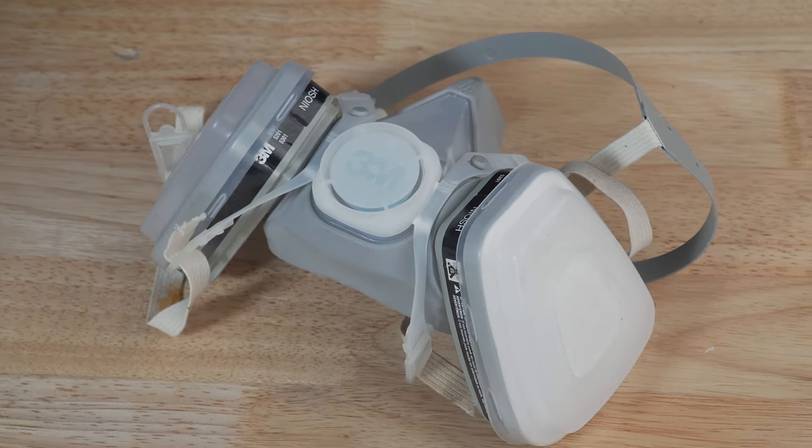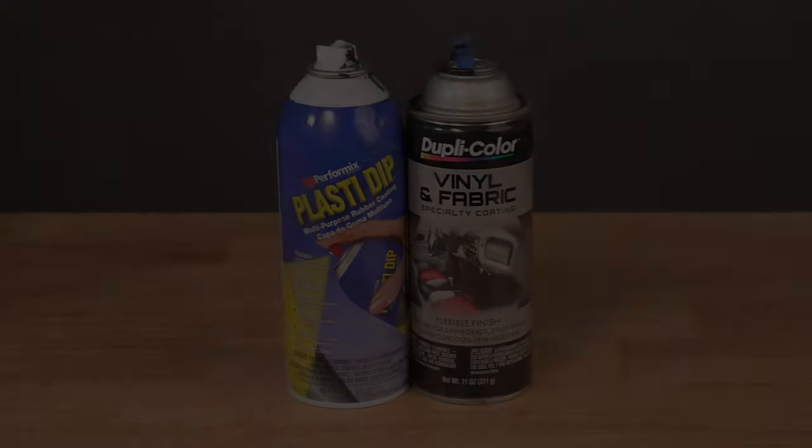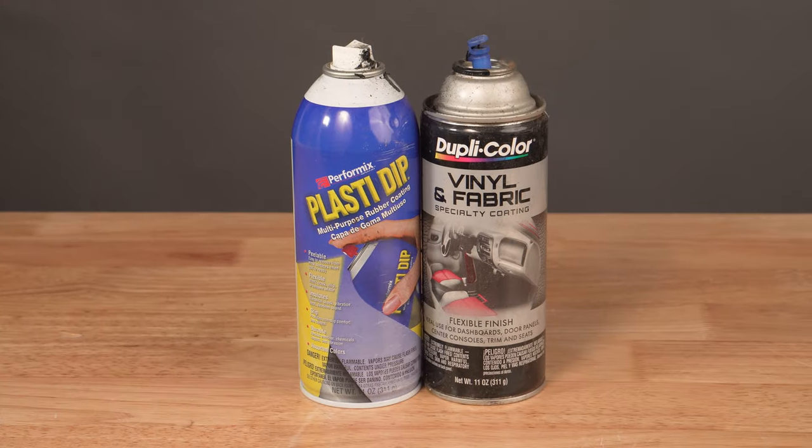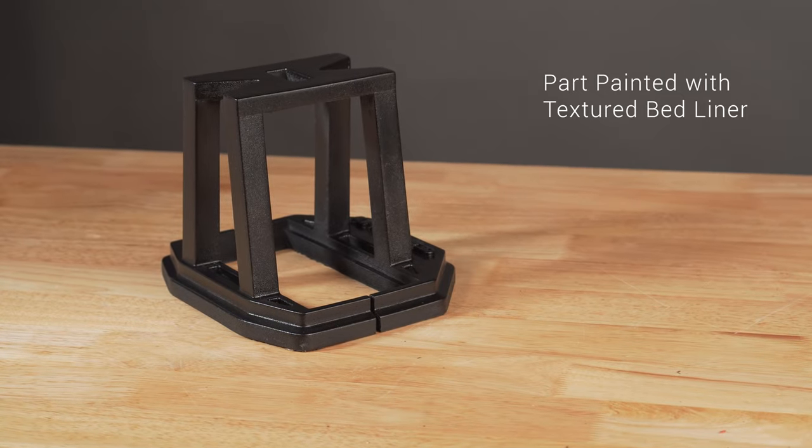Paint is toxic and harmful. Make sure to wear a mask. Use spray paint away from flammable objects. Bed liners and textured paint can be used in order to hide many blemishes and imperfections, including layer lines. It also gives the part a more rugged look.